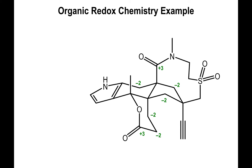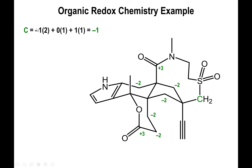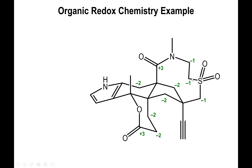Following the same approach, all the interior CH₂ carbons bound only to other carbons on both sides will have that −2 charge. Now consider the carbon bonded to a sulfur: we ignore the C–C bond, but this carbon also has two hydrogens, bringing its charge to −2, and one bond to sulfur — which is more electronegative — bringing the charge up by +1. So this carbon has a net charge of −1. The same applies to the carbon on the other end of that sulfur linkage, and to the carbon adjacent to the nitrogen.